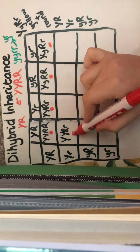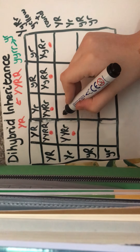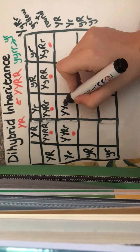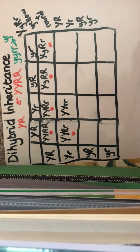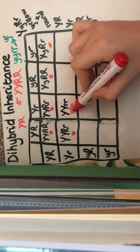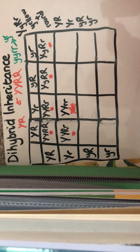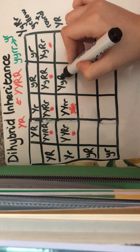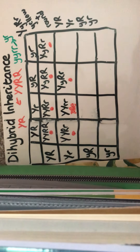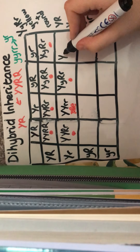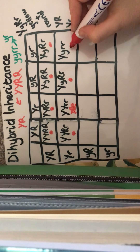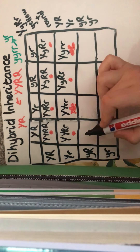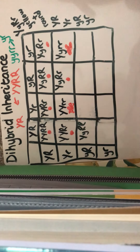If this was in an exam and they wanted to show the genotypes, you can just draw it in the Punnett square and annotate it. Here we have homozygous dominant for the yellow trait, so it's going to be yellow. However, we've got recessive homozygous for the wrinkle trait, so it's going to be yellow and wrinkled. And here again it's going to be yellow and wrinkled.